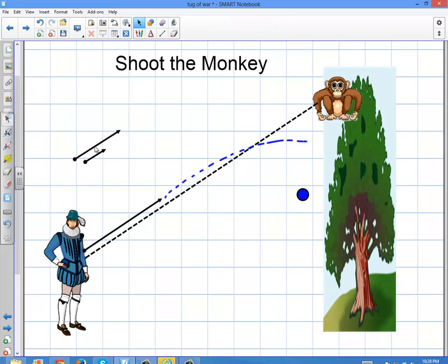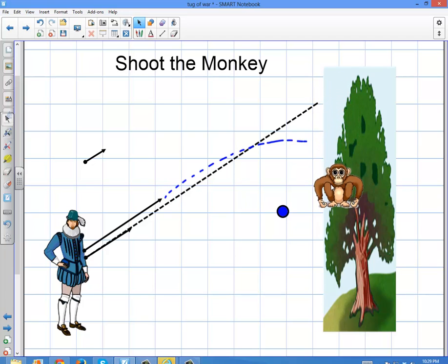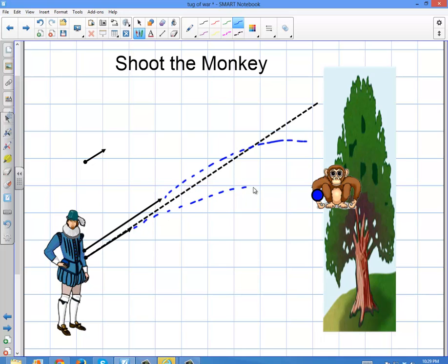What would happen is if he did it with a lower velocity here, the monkey would fall further, right? So in this case, the monkey might fall further, but no matter what happens, it's still going to hit the monkey. So in that case, with a medium velocity, it's still going to hit the monkey like this.